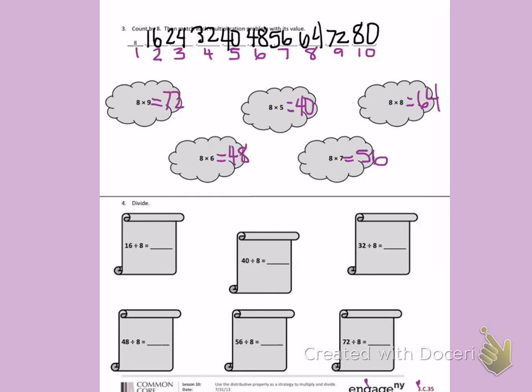Number 4, divide. I'm going to use my count by again to help me divide. I am dividing all these by 8s, so I can look at 16 in my count by, and I see the number 2 is corresponding. So 16 divided by 8 is 2.